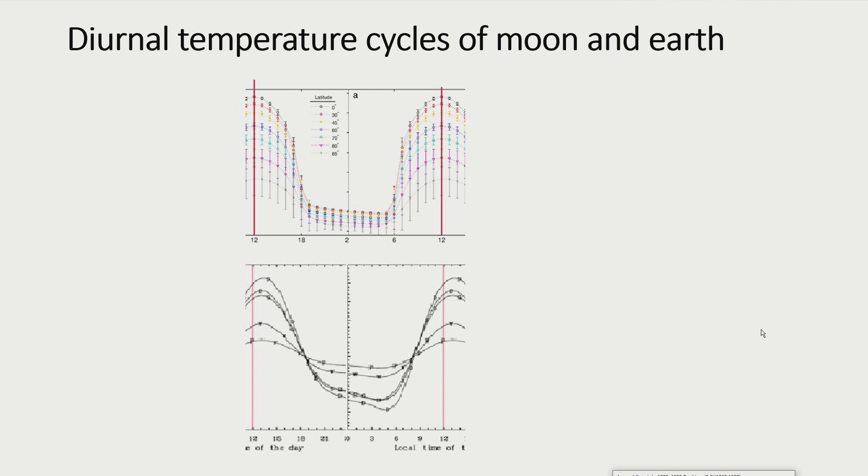Accordingly, it does not seem to be the mysterious back radiation of greenhouse gases that makes the Earth habitable. The Earth's mild climate is more likely to be owed to its rapid rotation and the large heat capacity of its surface and atmosphere. The latent heat that is converted during phase transitions of water also contributes to the high heat capacity of the atmosphere and the Earth's surface.